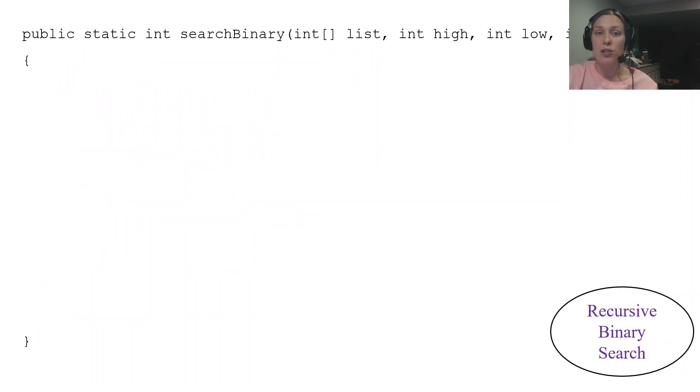So the recursive binary search takes four parameters now. It takes the list, it's going to take two indexes that represent your high and your low now, and then num represents what you're trying to look for. So high index and low index - they're still going to start off as low being zero and high being your list.length minus one. So when you initiate this recursive algorithm you start off with those definitions. Low is zero and high is list.length minus one. And then we have an if statement.